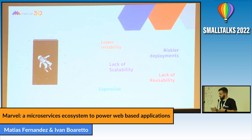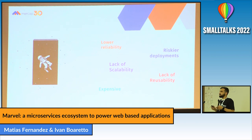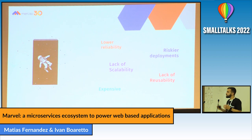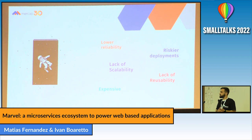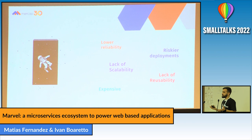Microservices seem to solve that and that's why we headed that way. Another problem was the lack of scalability because we had instances where we needed better performance, and sometimes we needed just one module to be more performant. The solution used to be replicating the whole system with a new instance — literally a duplicated system, a really big instance duplicated or triplicated according to the client's need.